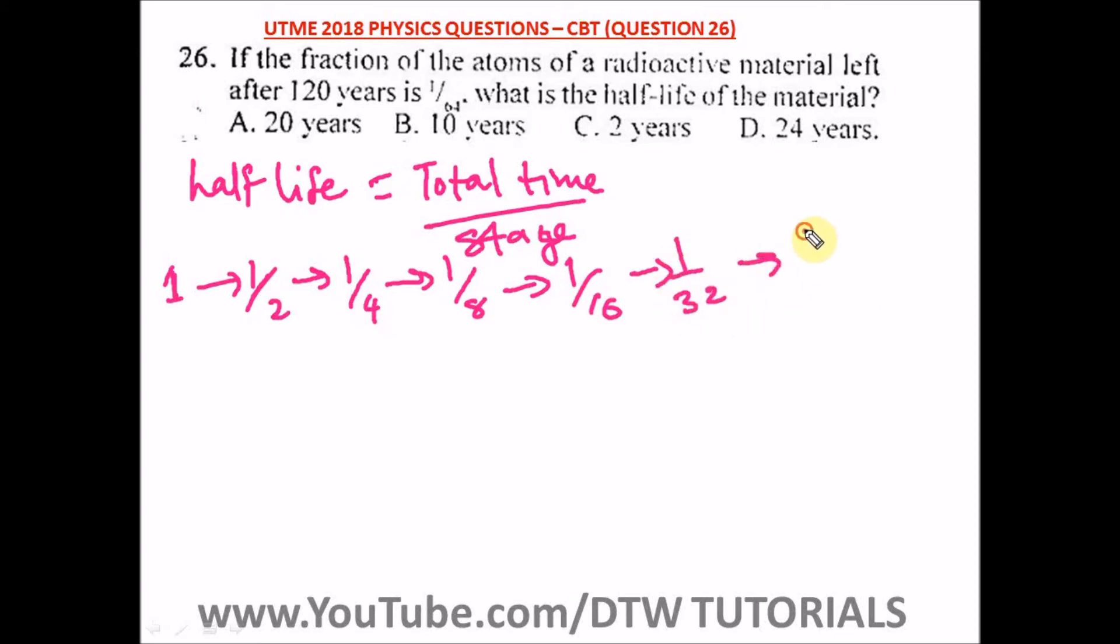So we have how many stages here? We have 1, 2, 3, 4, 5, 6. Our formula says total time over the stages, so that's 120 divided by 6. 6 will go in 12 two times, so we are left with 20. So the answer is 20 years.